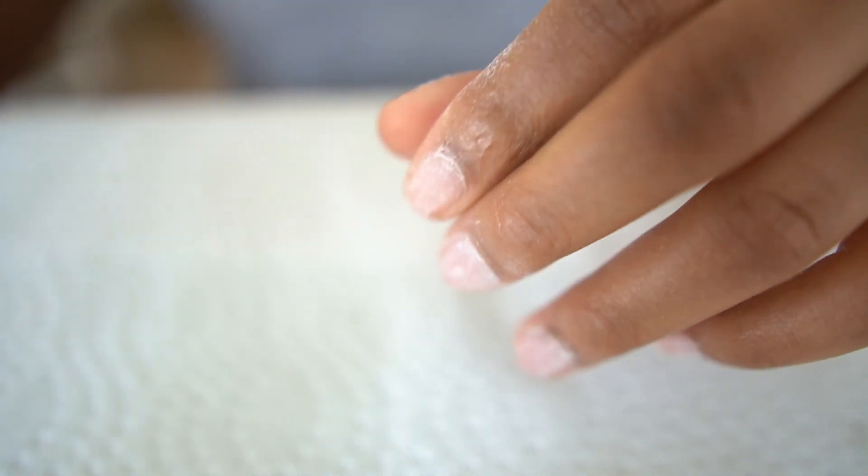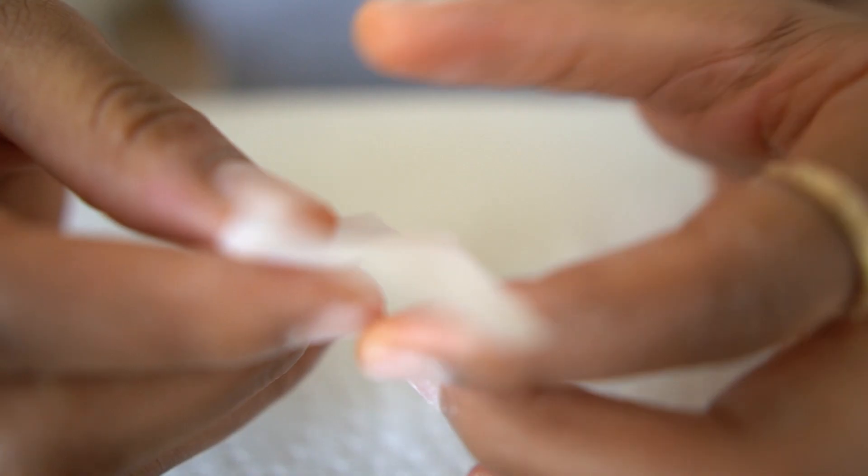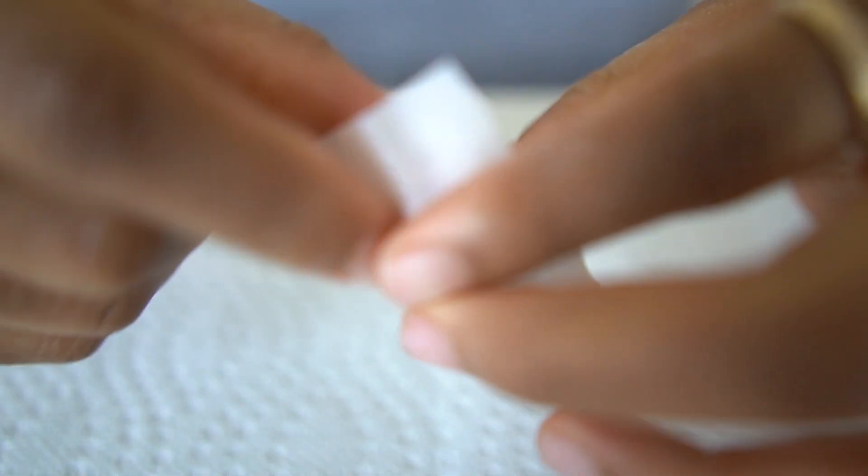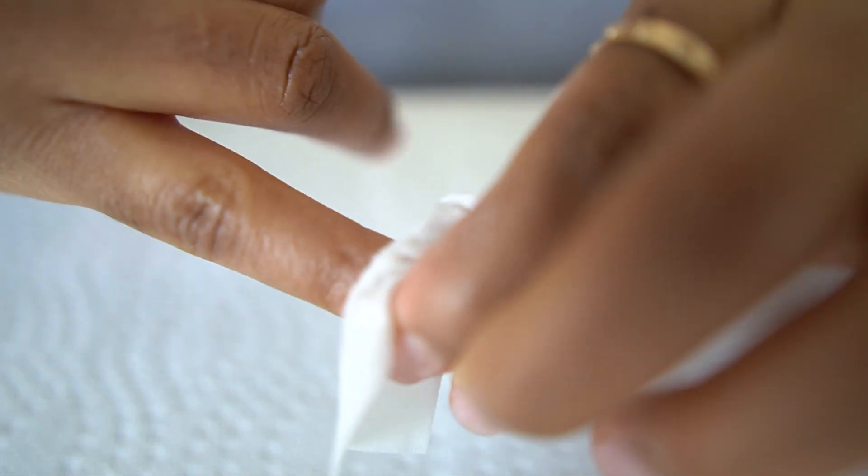And after that, I'm going to move on to the alcohol pad that it comes with. Guys, you don't necessarily have to use this, you can also use methylated spirit or rubbing alcohol if you have that. This is just to get rid of any residue oils because our nails actually naturally produce oils. This gets rid of all of that, so I wipe my nails down.